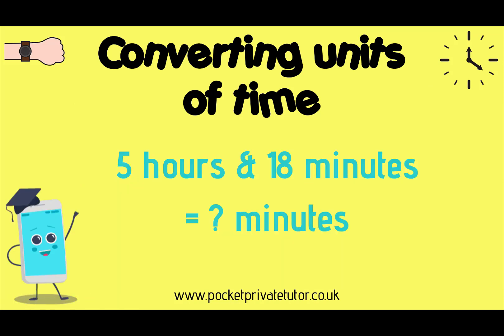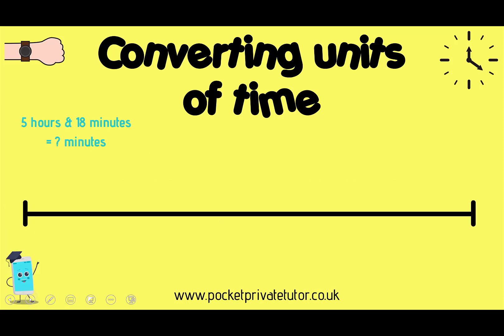Now let's change 5 hours and 18 minutes into minutes. As before, we always start by thinking about how many of one unit is equivalent to the other. Here I'm going to write 1 hour is equivalent to 60 minutes. We write it this way because expressing 1 minute as a fraction of hours would give a messy decimal — so we use the smaller unit: 1 hour equals 60 minutes.